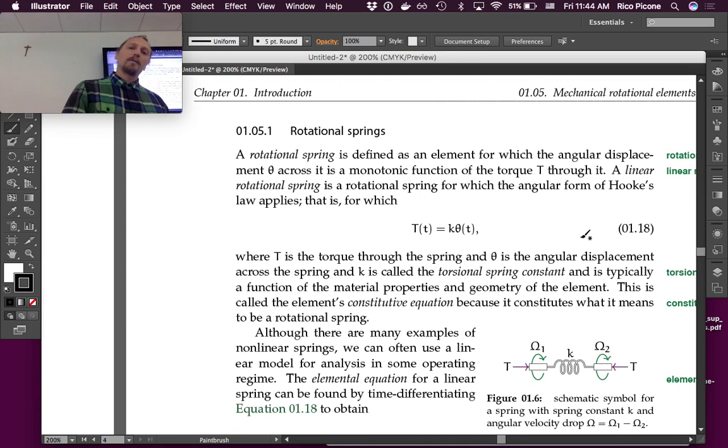A rotational spring is defined as an element for which the angular displacement θ across it is a monotonic function of the torque through it. There are actual discrete rotational spring elements. Torsional spring or rotational spring, you'll hear both terms - use torsional and rotational synonymously. Can anybody think of a rotational spring that they've encountered before? An explicit rotational spring.